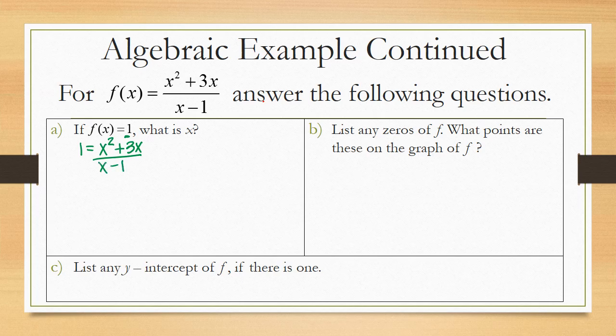We get 1 equals x squared plus 3x all over the quantity x minus 1. Now to solve this, I'm going to multiply both sides by the denominator x minus 1. By doing that, this will cancel that denominator out on the right-hand side. I'm left with x minus 1 equals x squared plus 3x.